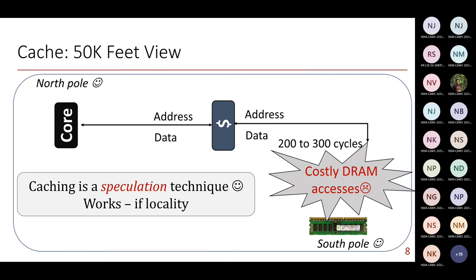Caching, at a 50,000-feet view, is a speculation technique. It speculates that a subset of data or code can be stored in a small memory compared to a gigantic DRAM, and that this subset can be accessed in a few cycles rather than hundreds. For example, if your DRAM is 4 GB, you put a few KBs in cache, speculating those KBs will be useful. There must be some rationale for this speculation — and that rationale is that programs have locality.